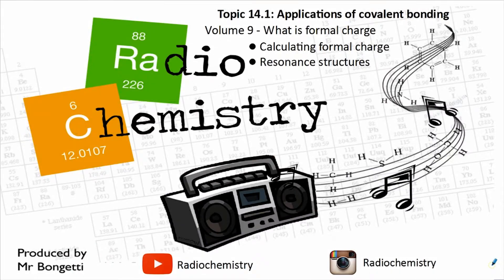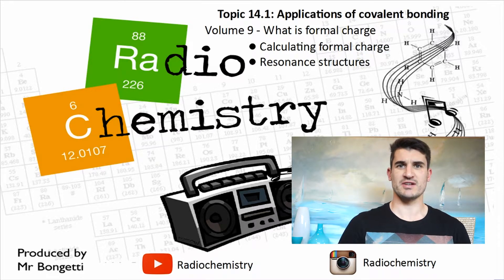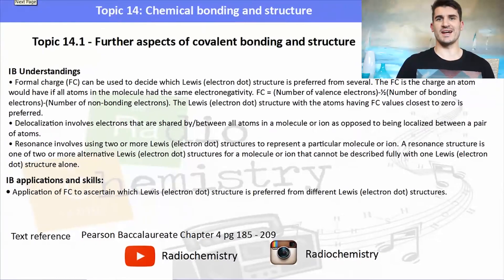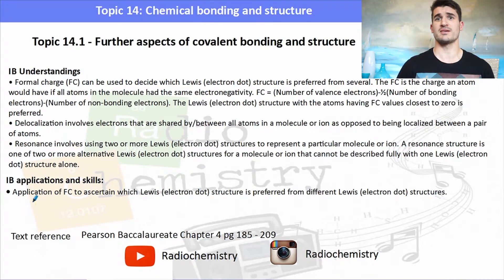Welcome to another video. This is topic 14.1, extra applications of covalent bonding, and in this one we look at formal charge. This is volume 9. We look at calculating the formal charge and then we also have a look at resonance structures. The IB understandings and applications and skills focus around the concept of formal charge, how we can apply it to delocalization, and then resonance structures, including drawing some of those structures.